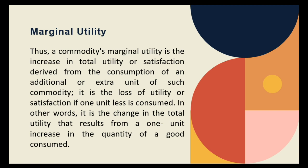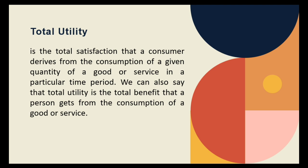The concept implies that the utility or benefit to a consumer of an additional unit of a product is inversely related to the number of units they already own. A commodity's marginal utility is the increase in total utility derived from consumption of an additional unit, or equivalently the loss of utility if one unit less is consumed. On the other hand, total utility is the total satisfaction that a consumer derives from the consumption of a given quantity of a good or service in a particular time period. Total utility refers to the sum of utility derived from consuming all units of a given commodity. The total utility is the summation of all individual marginal utilities.